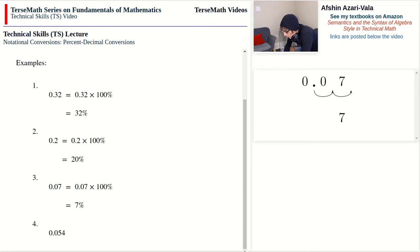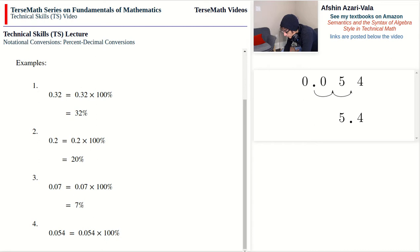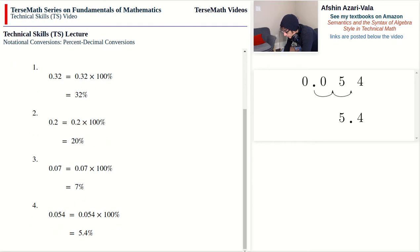Problem number four: 0.054. Again we multiply by 100. We take the decimal point and move it forward over two digits, giving us 5.4. So 0.054 = 5.4%.